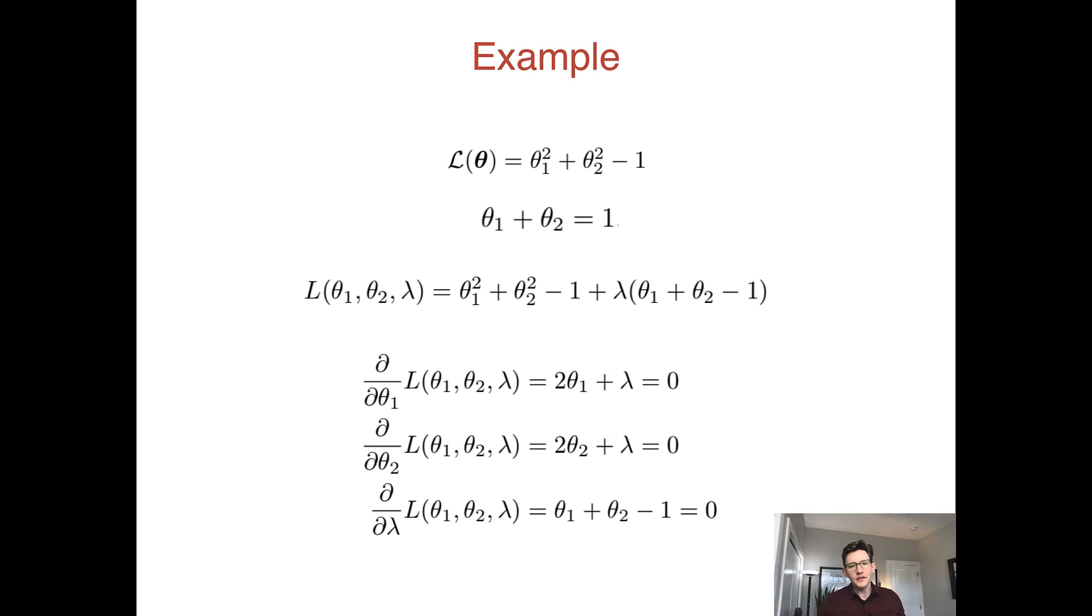That would violate our constraint, and there's kind of no way for us, other than with the Lagrangian which we're about to use, to tell our gradient descent that we want this constraint to be met.